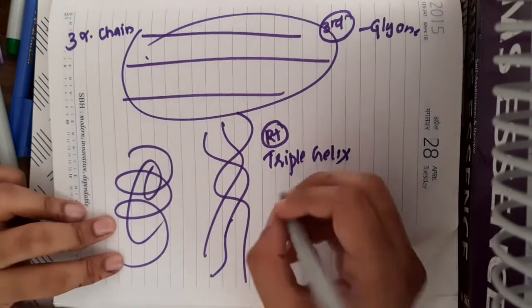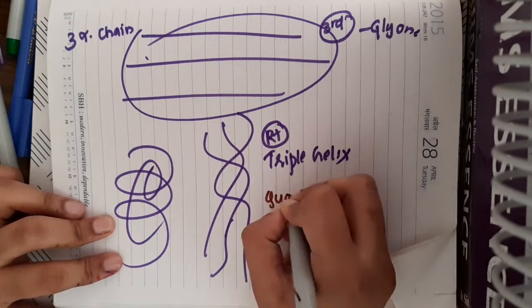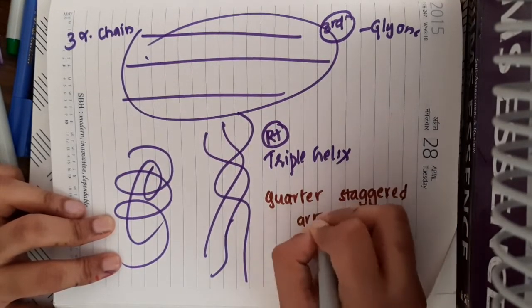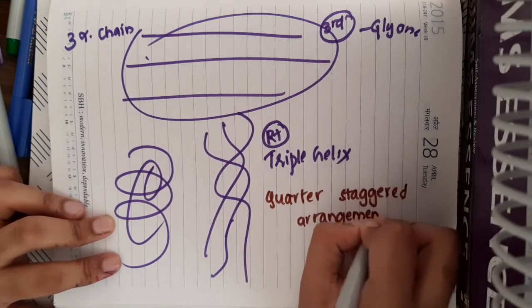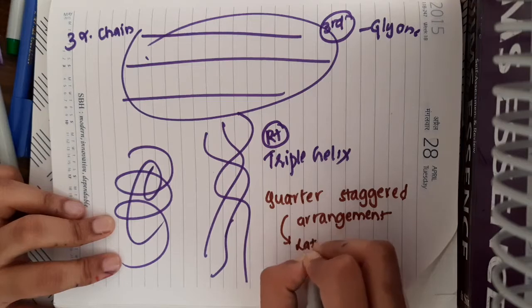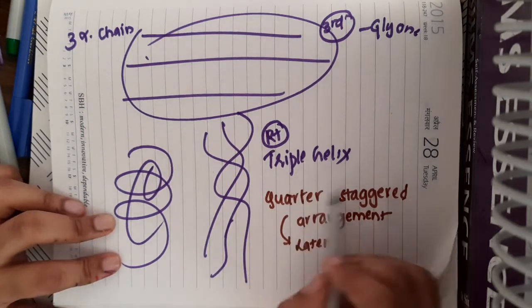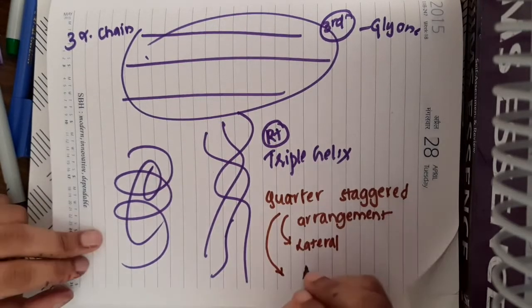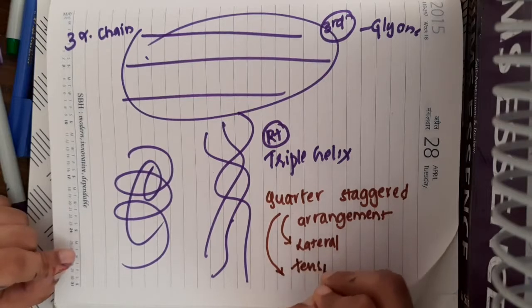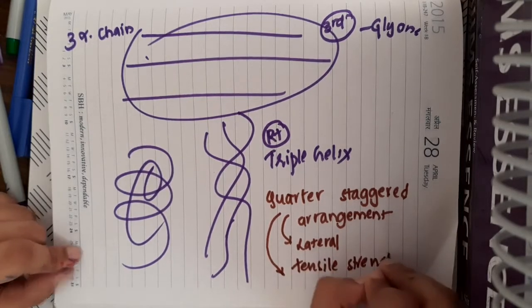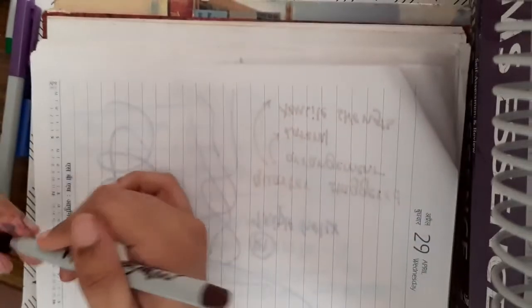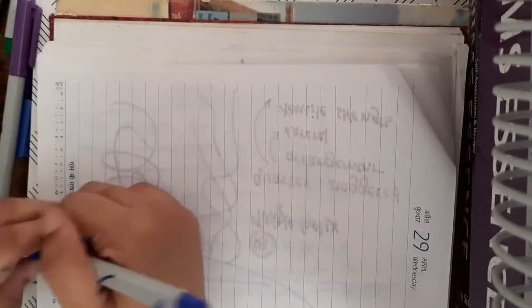This also has one more arrangement which is named as quarter staggered arrangement. In this quarter staggered arrangement, this is a lateral association of triple helical units. This quarter staggered arrangement is responsible for tensile strength of collagen fibers. Now let us learn about the synthesis of collagen fibers. In the synthesis of collagen fibers, we have two different types of events.